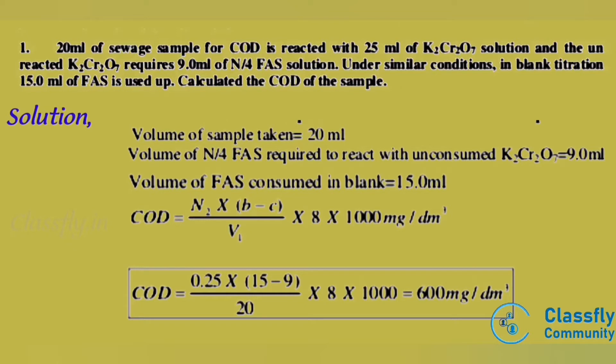So, COD = N2 × (B − C) / V1 × 8 × 1000 mg per dm³. Substituting the values: COD = 0.25 × (15 − 9) / 20 × 8 × 1000 = 600 mg per dm³.